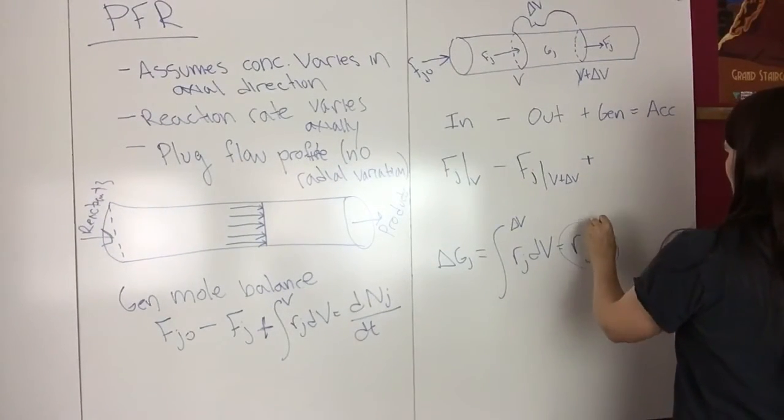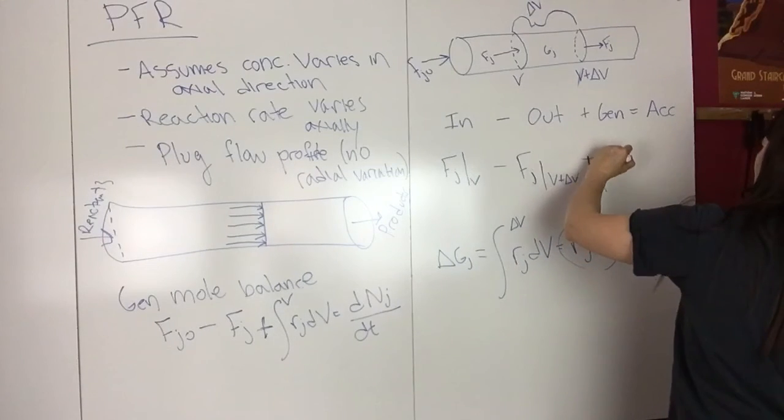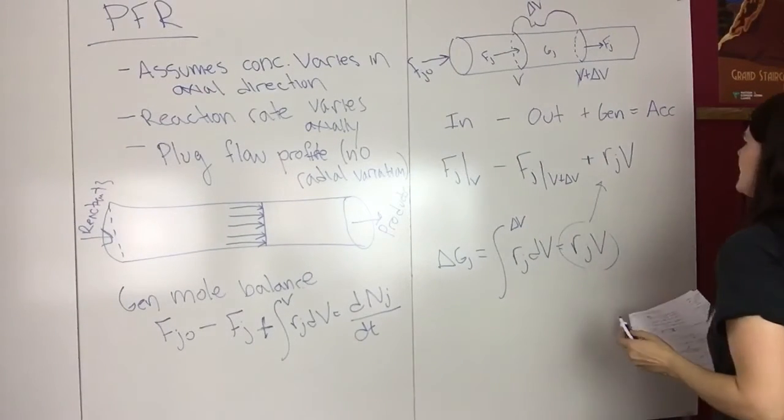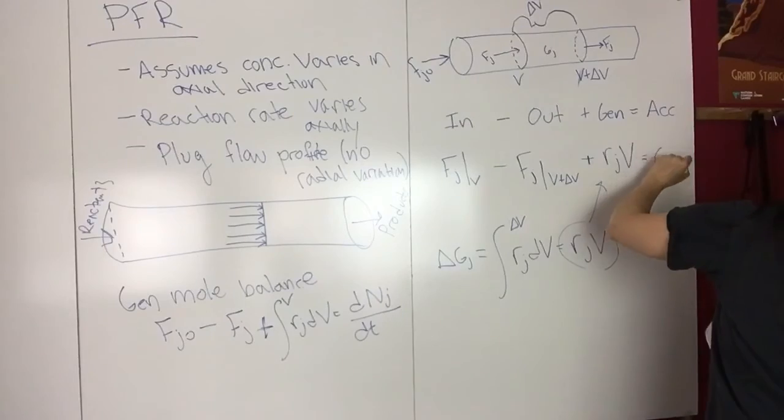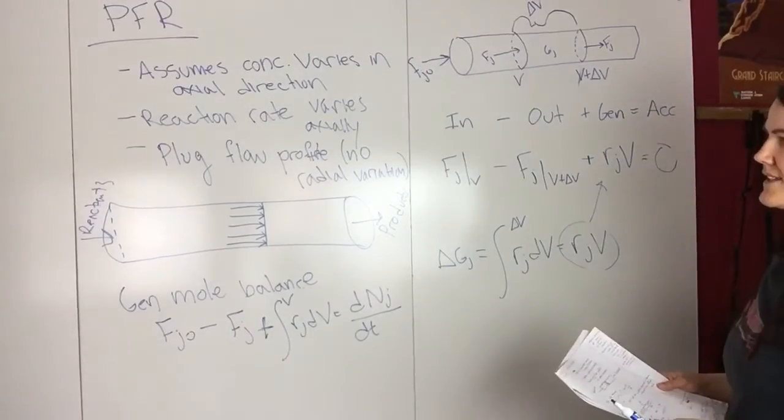Putting this in, we have R_J delta V for the generation term, and we know there's no accumulation, so that's zero.